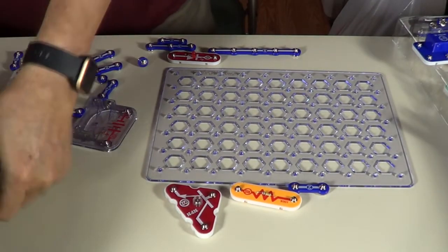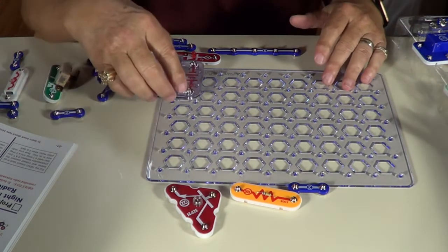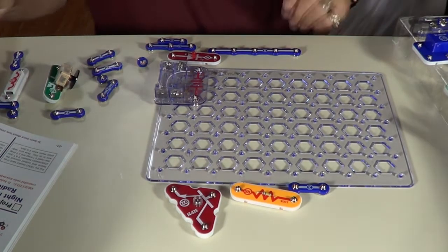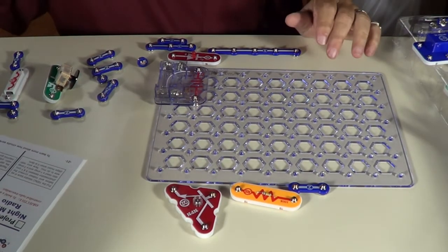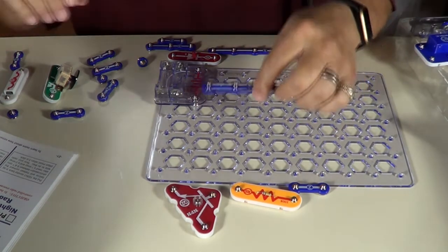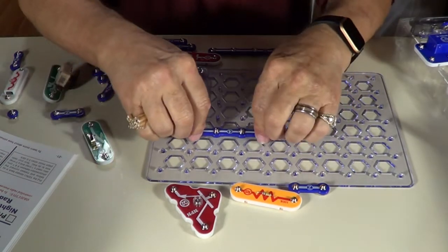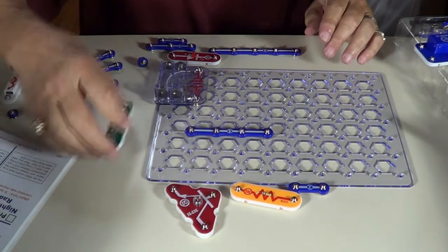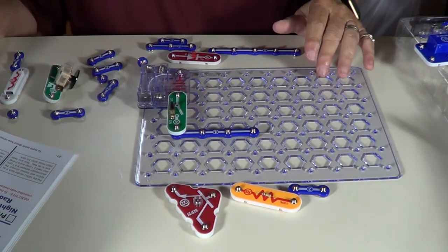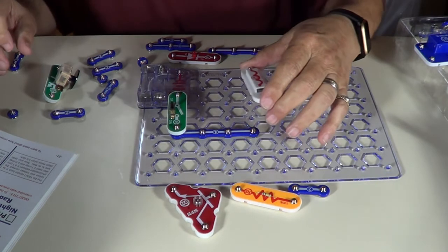First off we need the battery right there. Then we're going to need a 4-banger, needs to go right here. Your on-off switch S1 goes right there.